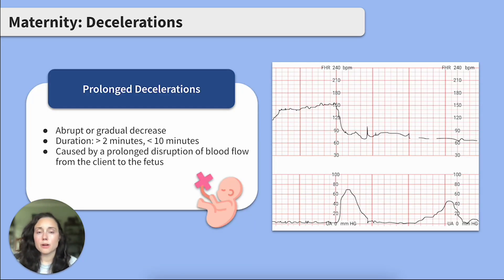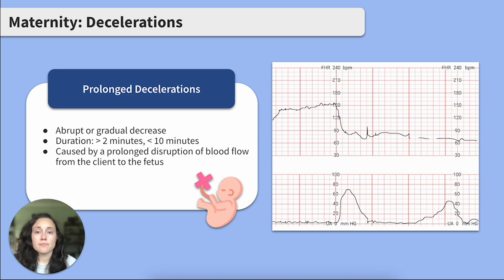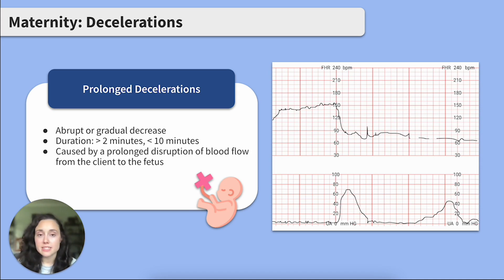Prolonged decelerations are abrupt or gradual decreases in heart rate lasting about 2 to 10 minutes. These can have a few different causes, but essentially they center around prolonged interruption of blood flow from the client to the fetus — such as prolonged cord compression, uterine tachysystole, or hypotension.